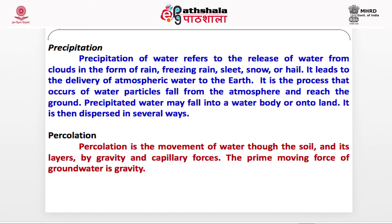Precipitation refers to the release of water from clouds in the form of rain, freezing rain, sleet, snow, or hail. It leads to the delivery of atmospheric water to the earth, occurring when water particles fall from the atmosphere and reach the ground. Precipitated water may fall into a water body or onto land and is then dispersed in several ways.